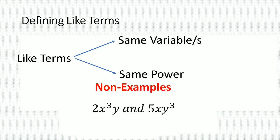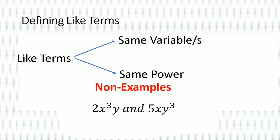Take this example: if I had 2x cubed y and 5xy cubed, we can clearly see that we have an x and a y in common with both terms. However, in the term 2x cubed y, the cube is written over the x, and in the term 5xy cubed, x is written to the power of 1 — clearly they are not the same power. The reverse is happening with the y: in 2x cubed y, y is written to the power of 1, and in 5xy cubed, y is written to the power of 3. Because they are not written to the same power, x cubed y is not equal to xy cubed, and therefore these terms are not alike.